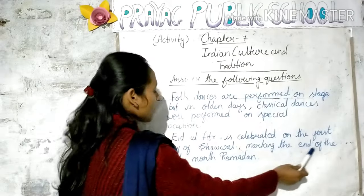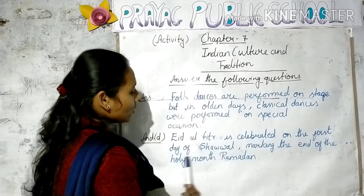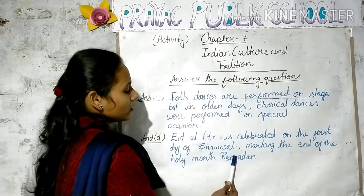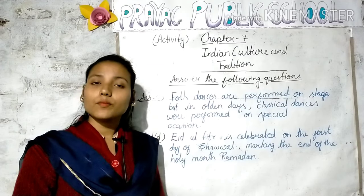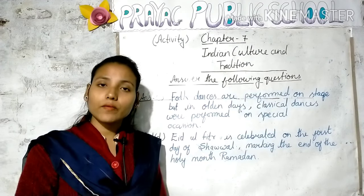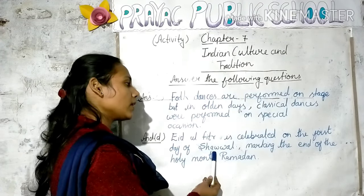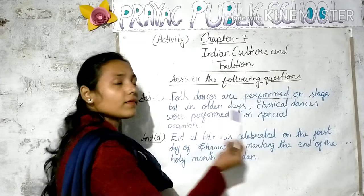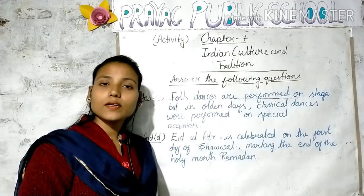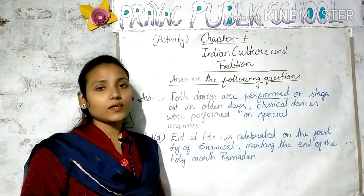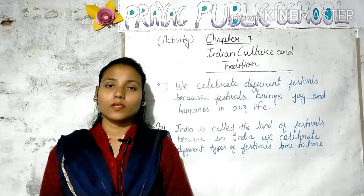The tenth month of the Islamic calendar is called Shaban. Clear? Marking the end of the holy month of Ramadan. Bacho, Ramzan ke pavitra mahine ke ant mein aur Shaban ke first day Eid al-Fitr celebrate kiya jata hai. Clear everyone?